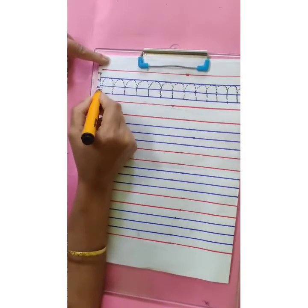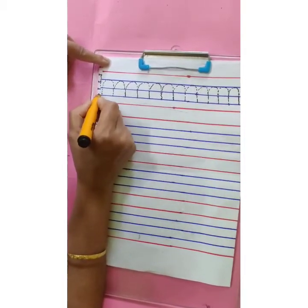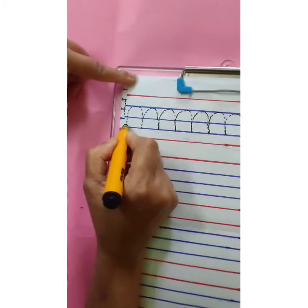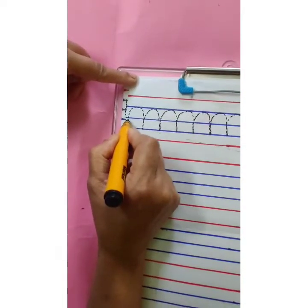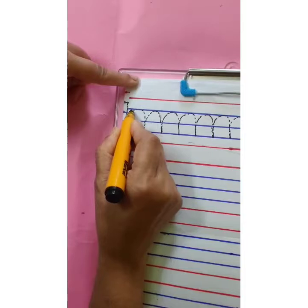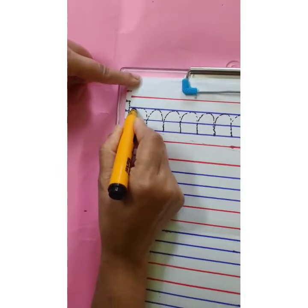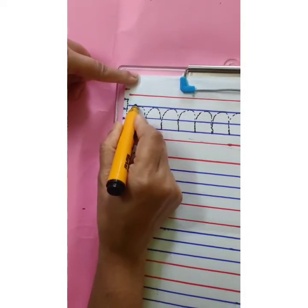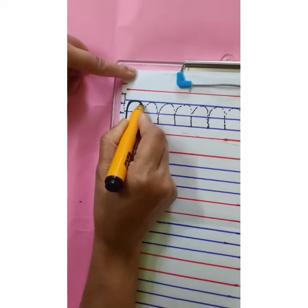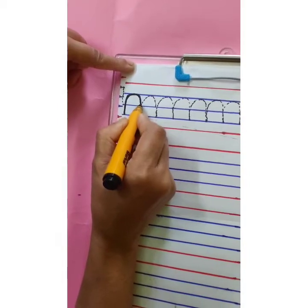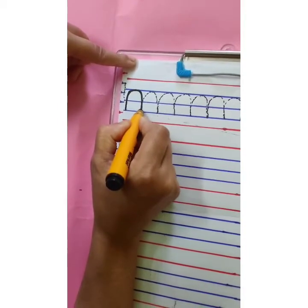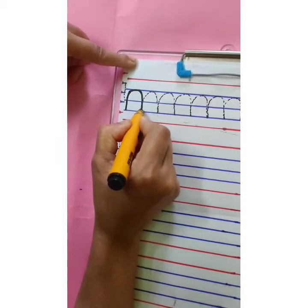You are going to start with the third blue line. Trace the dots, go up, make a curve, touch the first blue line and come down. Again, touch the third blue line.